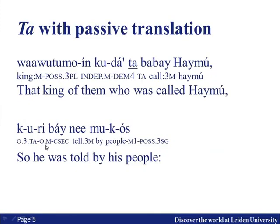One way to characterize an impersonal is that it is a construction equivalent to a passive construction in other languages — that can be translated with a passive. 'That king of them who was called Haimu' — so 'wavut mo'in kuda tababai haimu' — 'that they call,' 'one calls,' 'that people call Haimu.' So that is the 'ta,' the impersonal here, that can easily be translated with a passive. Or in the next one, 'kuribai ne mukos' — 'he was told by his people' — where the agent is marked with 'ne' as the by-phrase.